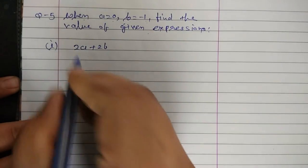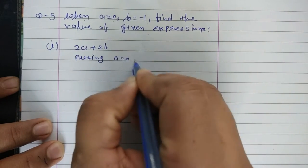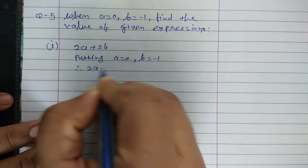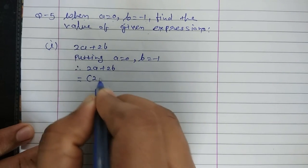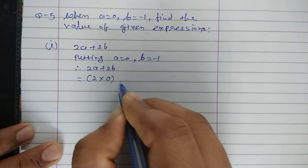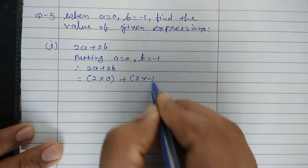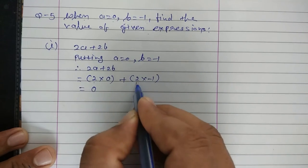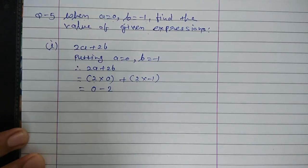Expression number 1: 2A plus 2B. Putting A is equal to 0, B is equal to minus 1. Therefore expression 2A plus 2B is equal to 2 multiplied by 0, plus 2 multiplied by B, where B is minus 1, so it is 2 multiplied by minus 1. 2 multiplied by 0 is 0, plus minus 2. So 0 minus 2, the answer is minus 2.